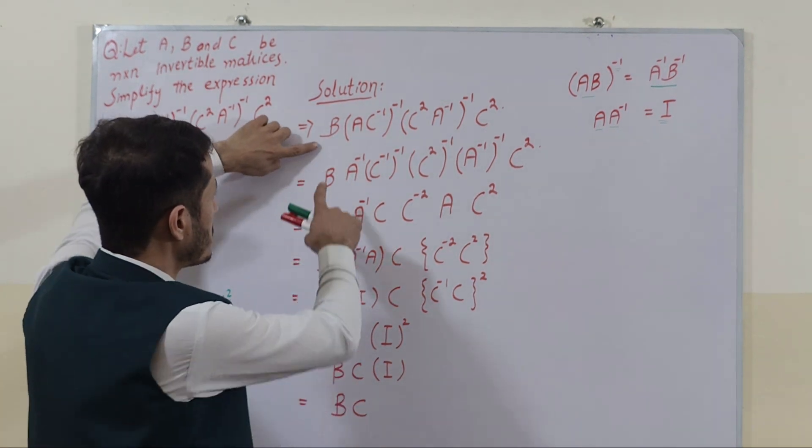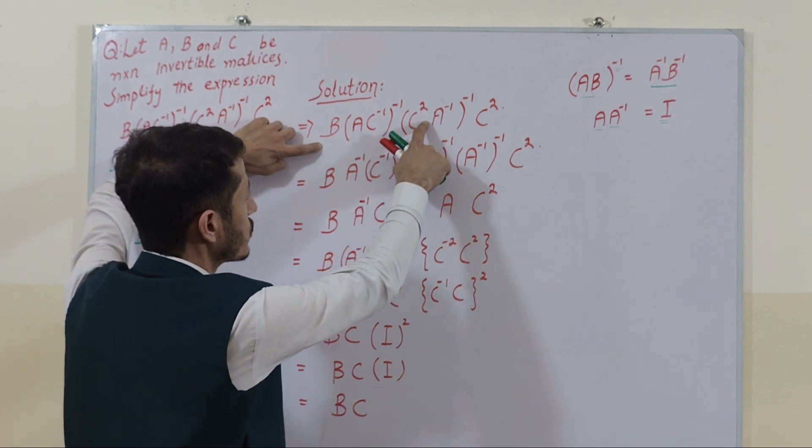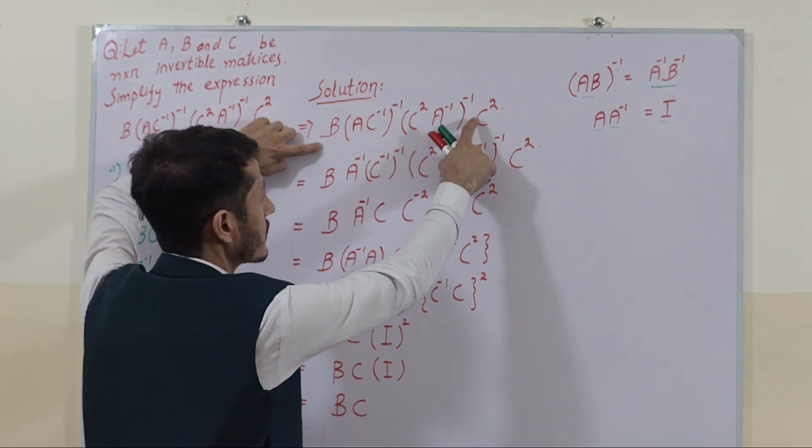The expression is B, A, C inverse whole inverse C square, A inverse whole inverse C square.